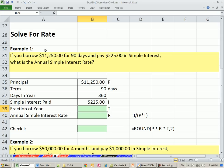If you borrow $11,250 for 90 days and you pay $225 in Simple Interest, what is the Annual Simple Interest Rate? Here's our principal, our days, and our interest paid. Well, first let's calculate fraction of year.